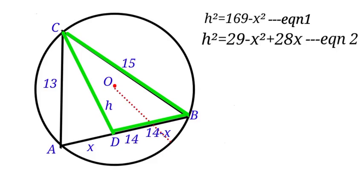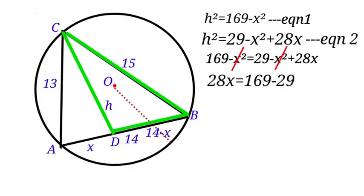If we take note, equation 1 and equation 2 both have the same left-hand side which is H squared. Now let us compare the two right sides of equation 1 and equation 2. We will have 169 minus X squared equals 29 minus X squared plus 28X. X squared will cancel X squared. We move 29 to this side of the equation.